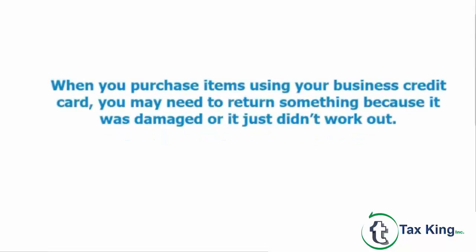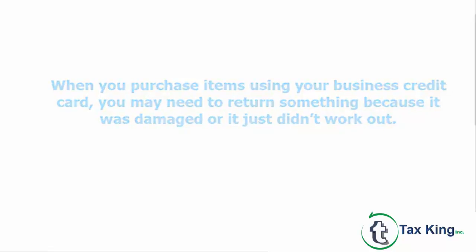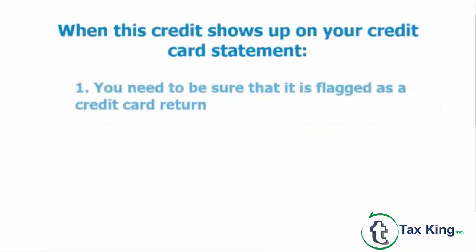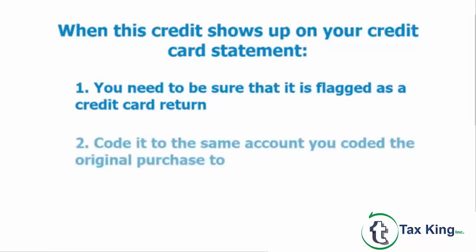When you purchase items using your business credit card, you may need to return something because it was damaged or it just didn't work out. The vendor will usually process the return using the same credit card that you used to make the purchase. When this credit shows up on your credit card statement, you need to be sure that it is flagged as a credit card return and coded to the same account you coded the original purchase to.